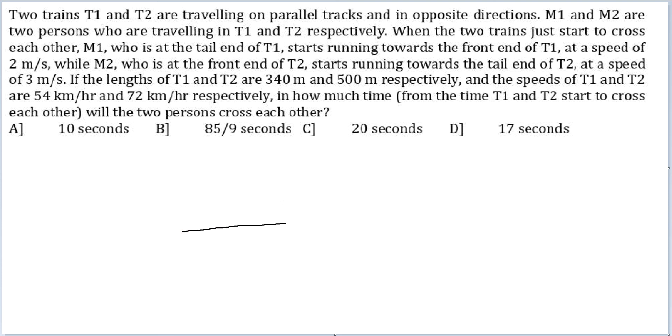One train is here. The other train is here. Just start to cross so their faces are meeting. This is T1. This is T2.